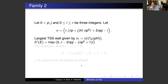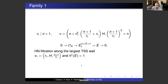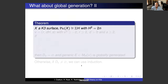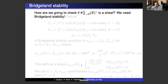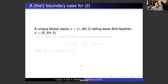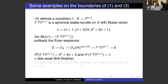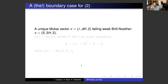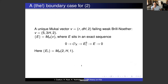So in your theorem you assume the Picard rank to be one — is this used in the proof? There are certain features which don't need Picard rank one, but certainly in terms of the inequalities, the simplicity of the inequalities is because of Picard rank one.